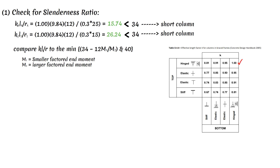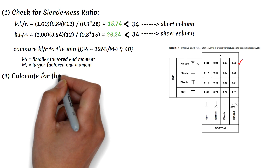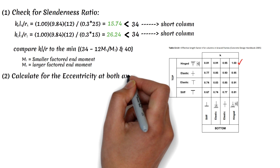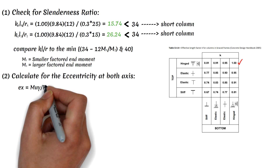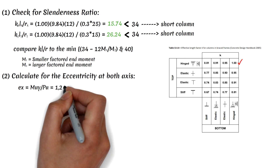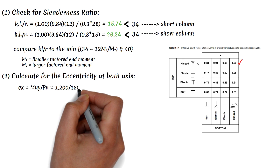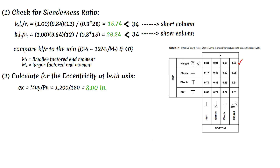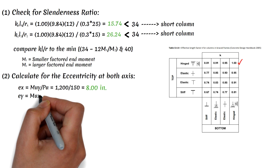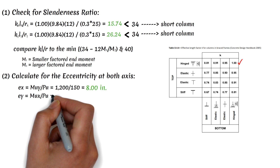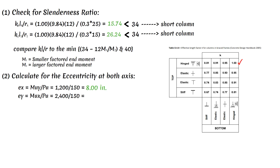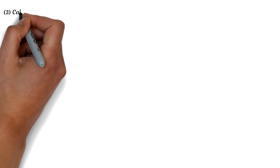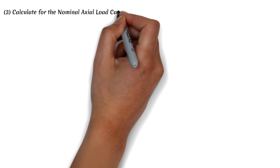The second step is to calculate the eccentricities at both axes. The eccentricity along the X axis, E sub X, equals MUY divided by PU, giving 8 inches. The eccentricity along the Y axis, E sub Y, equals MUX divided by PU, giving 16 inches.